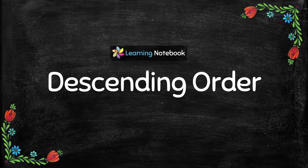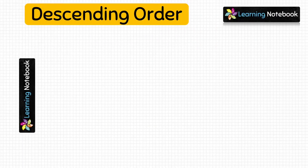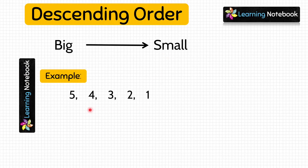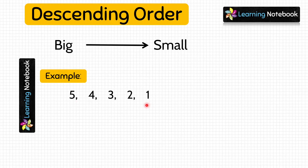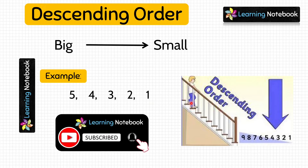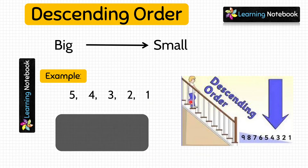Now let's understand what is descending order. Descending order means arranging numbers from big to small. For example, look at these numbers: 5, 4, 3, 2, 1 — the numbers are arranged from biggest to smallest. So we have arranged these numbers in descending order.